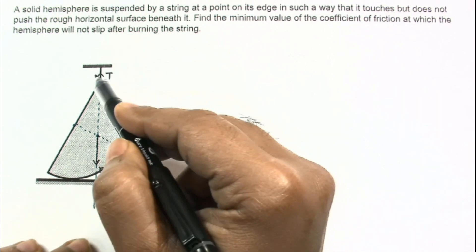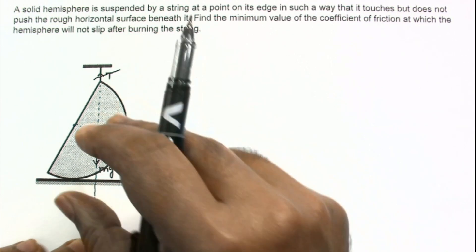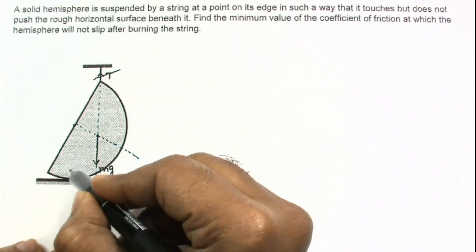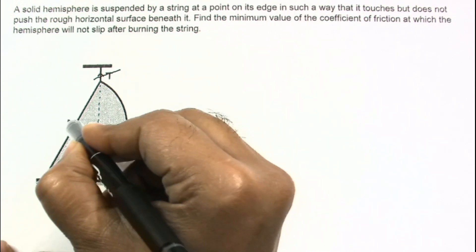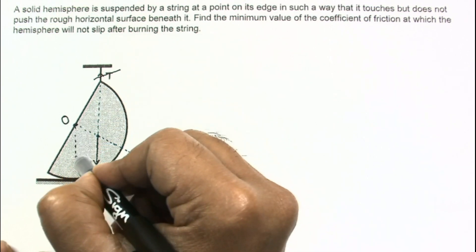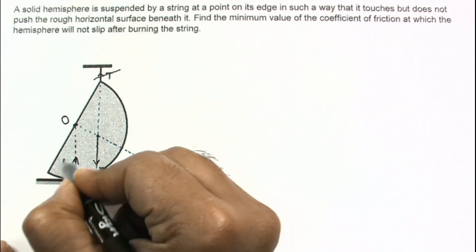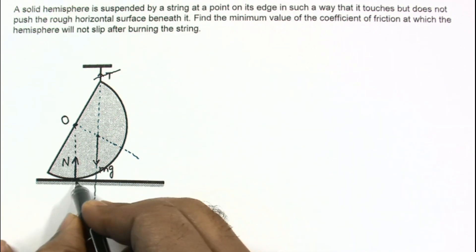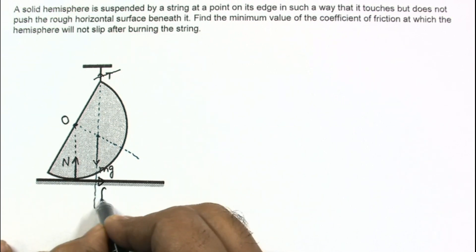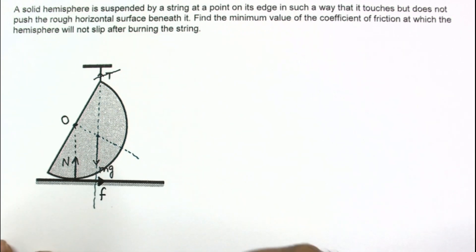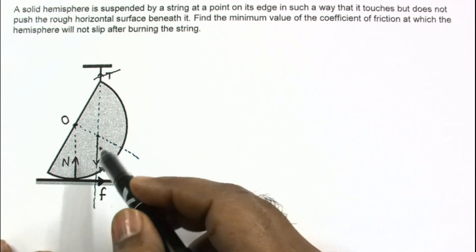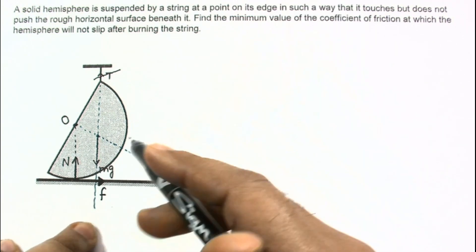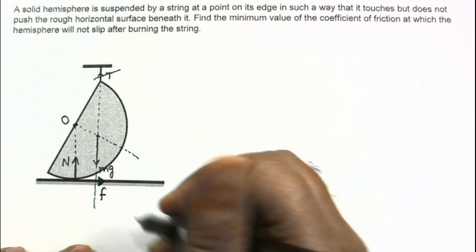When the string is burned, tension disappears and the hemisphere will try to rotate in the clockwise direction. Due to this rotation, there will be a normal reaction from the surface passing through the center of curvature. The contact point will tend to slip in one direction, so a friction force acts oppositely. There are now three forces: normal reaction, friction, and mg.